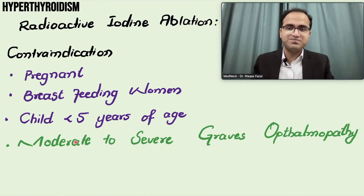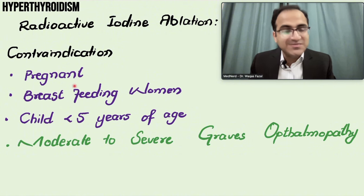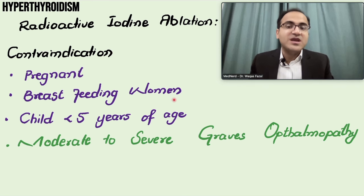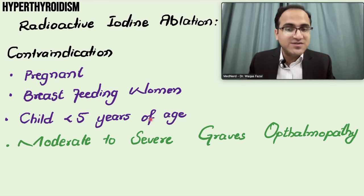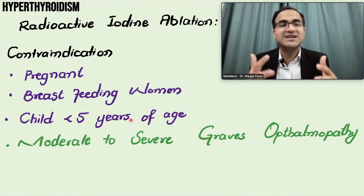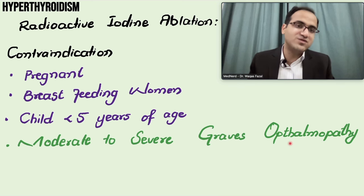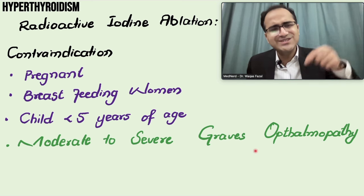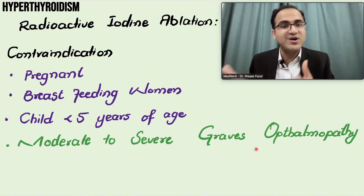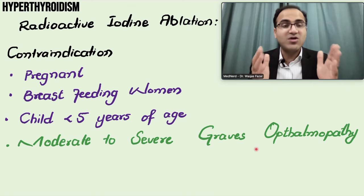Contraindications to radioiodine ablation include pregnancy, as it is teratogenic; breastfeeding women; children less than five years of age, because rapidly growing cells can be disturbed and tumor formation may occur. A very high-yield and commonly tested point: moderate to severe Graves' ophthalmopathy is a contraindication to radioiodine ablation, because thyroid ophthalmopathy worsens with radioiodine ablation treatment.